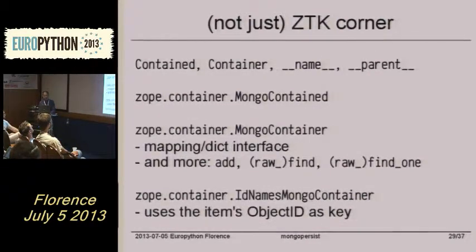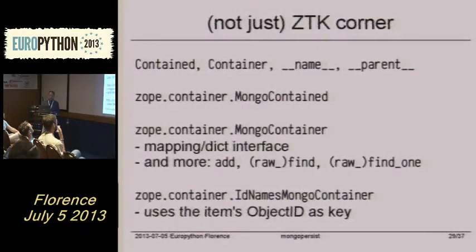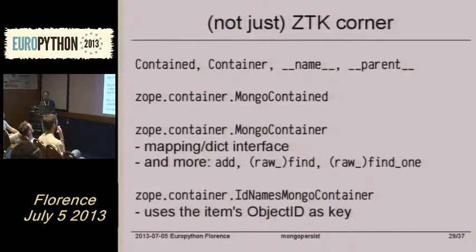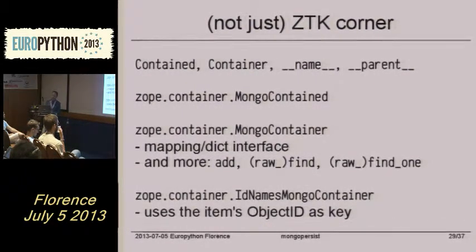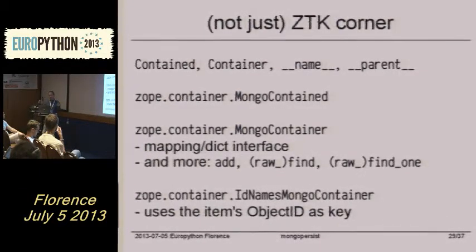MongoContainer is a mapping-like interface, but it adds more features on top of the bare MongoCollection, like add, where you can simply add an object without knowing its key. find and find_one return objects, but those objects are constrained to the scope of the container — for example, imagine in the root you have persons and employees for two companies, Company A and Company B.